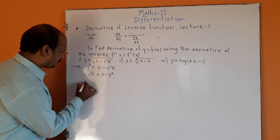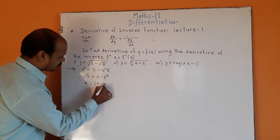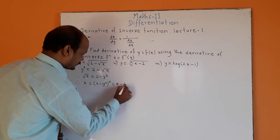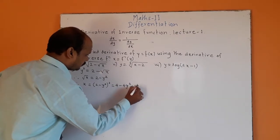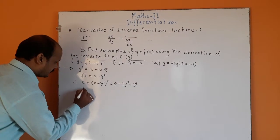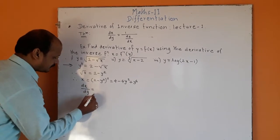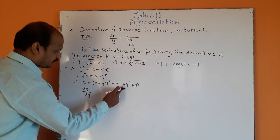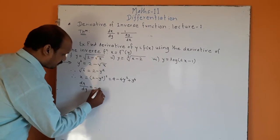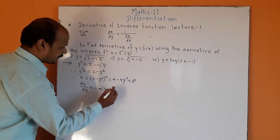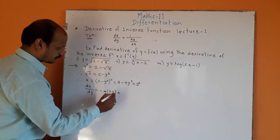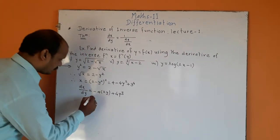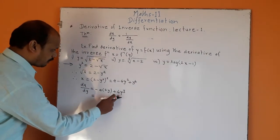Squaring both sides again, therefore x = (2 − y²)² = 4 − 4y² + y⁴. Now differentiating both sides with respect to y, we get dx/dy = −4(2y) + 4y³, since the derivative of y² is 2y and the derivative of y⁴ is 4y³.